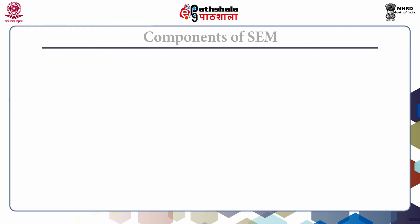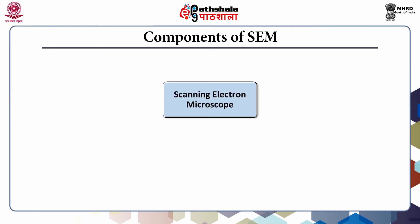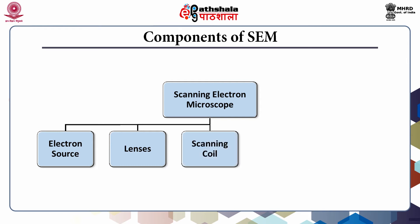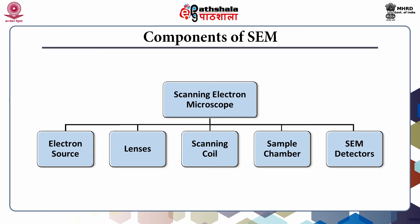This slide shows the various components present in a scanning electron microscope. These include electron source, electromagnetic lenses, a scanning coil, sample chamber and detectors. Additionally, a computer setup and related peripherals are also required.